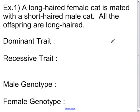Example 1. A long-haired female cat is mated with a short-haired male cat. All of the offspring are long-haired. What is the dominant trait, the recessive trait, the male genotype, and the female genotype?